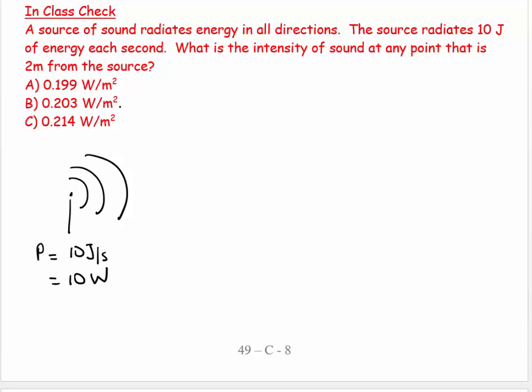What is the intensity of the sound at a point where the radius, the distance, is 2 meters? So from there to that, that's 2 meters. I say, well, my intensity is equal to the power over the area, which equals the power over 4π r squared.